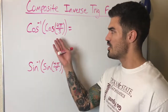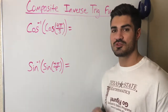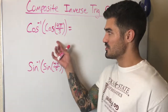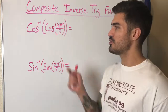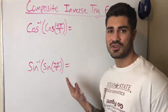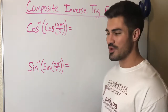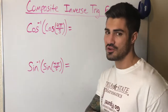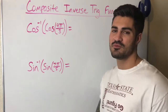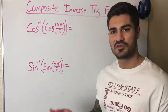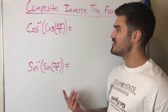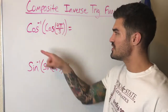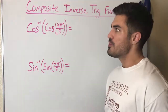What we have here is a composite function — basically a function within another function. My inner function is cosine of 4π/3, and my outer function is cosine inverse. From what we know about inverse functions, if we take a function and plug it into its inverse we get out x, so it might seem like we can just cancel both and be left with 4π/3.